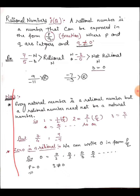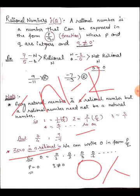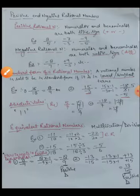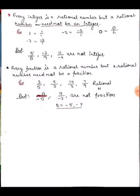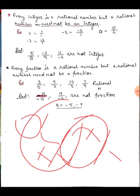An important note: not every rational number is a natural number, but every natural number is a rational number. Also, zero is a rational number because we can write it as zero upon one. Every integer — like plus five or minus seven — can be written in rational number form, such as minus seven upon one or plus five upon one. So every integer is a rational number.